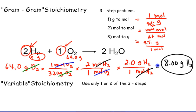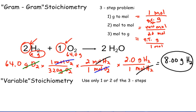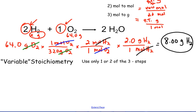That's gram-gram stoichiometry. Now I'm going to introduce problems considered to be variable stoichiometry, meaning you will use fewer than three steps.